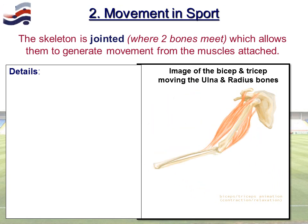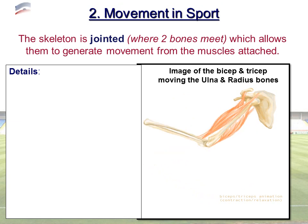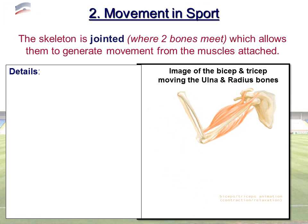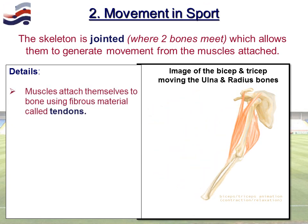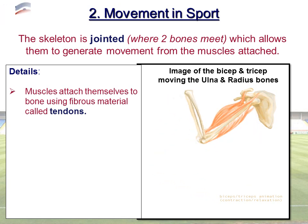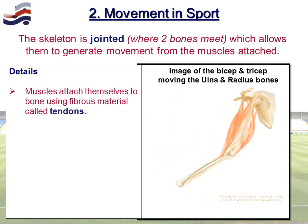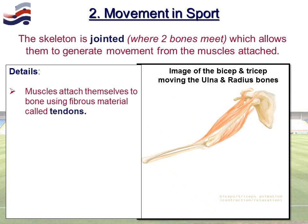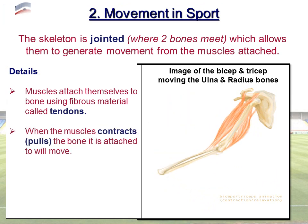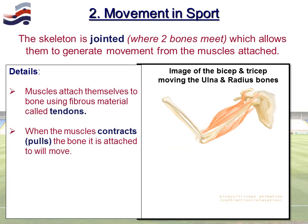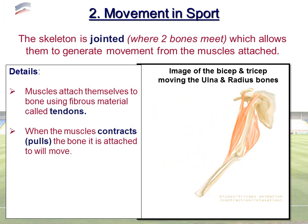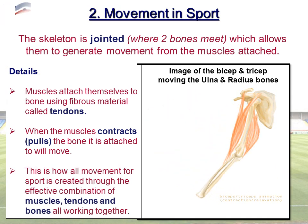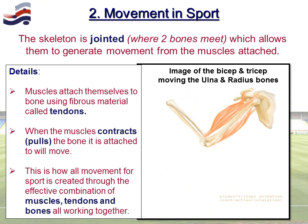Movement: the skeleton is jointed where two or more bones meet, and once we apply muscles and something called tendons, we create movement. Tendons are fibrous materials that attach muscle to bone. In the image of the bicep working and moving the ulna and radius, the tendon is located near the elbow. When that bicep contracts or pulls, the ulna and radius are pulled up towards the body, as if you were doing a bicep curl. It's the effective combination of muscles, tendons and bones that allows all movement in sport to happen.